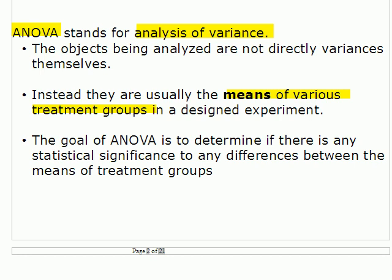For example, you have an experiment looking at the effect of light on plants. You take all these plants and divide them into different groups — say 40 plants in each group. The first gets five hours of sunlight, the second gets 12 hours, the next gets 24, another gets two, and so on. Each one of those is called a treatment group.